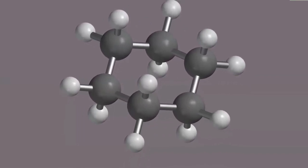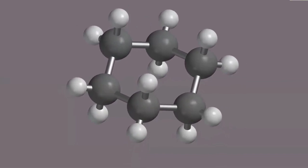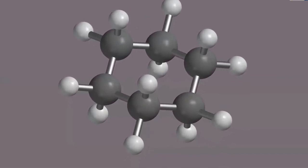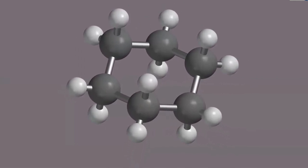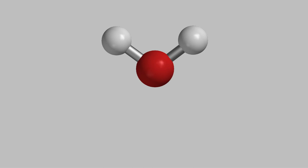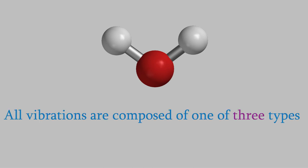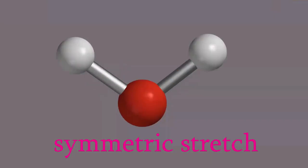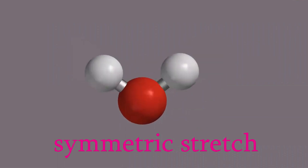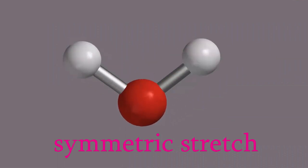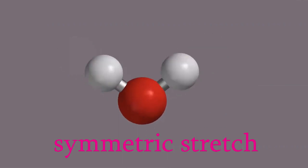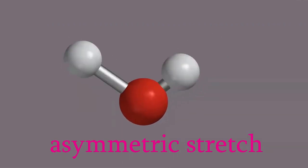Let's think about these vibrations a little more and try to get a good mental picture of the types of vibrations that can occur in a molecule. Let's start with a simpler molecule than cyclohexane — we'll use water as our example. Since water has only one central atom, its vibrations are much simpler. In fact, it turns out that all vibrations are composed of just three simple types, and water has one of each. The first type is called a symmetric stretch — in this one, the bonds get longer and shorter at the same time. Next is the asymmetric stretch, where some bonds get longer at the same time that others get shorter.